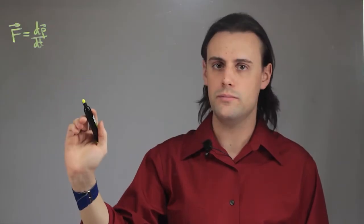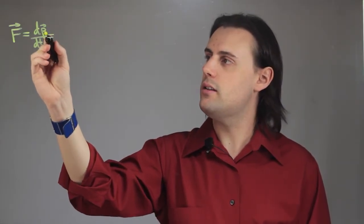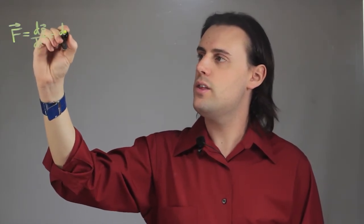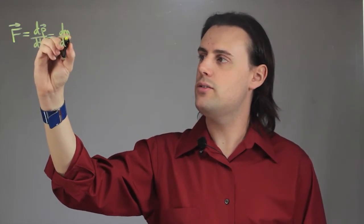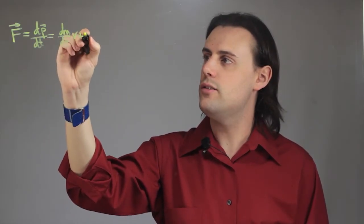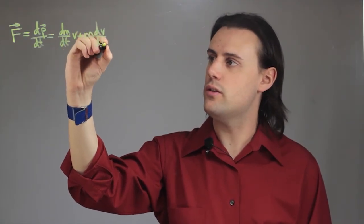then we can use the chain rule from calculus to differentiate the momentum with respect to time. So we're going to end up with the change in the mass over time times the constant velocity plus a constant mass times the change in velocity over time.